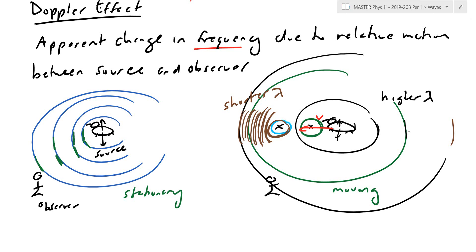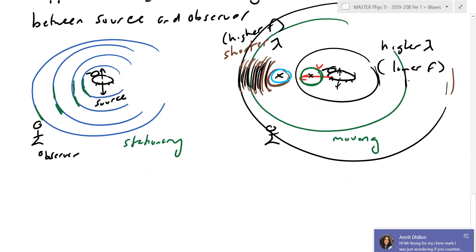Because wavelength is related to frequency, and frequency in the sound analogy relates to pitch — as the ambulance heads toward you, it chases its waves, producing a shorter wavelength and therefore a higher frequency, a higher tone. As it zips away, it runs from its waves — longer wavelength, lower frequency, lower pitch. That's why you hear the pitch go from high to low as an ambulance passes by.